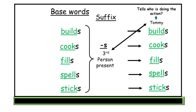I follow the same instruction as I did with the prefix example. However, the suffix s is confusing to kids because they know it makes a noun plural — more than one. However, it is very different when it follows a base word that is a verb. It means third person present — it tells who is doing the action, the verb.